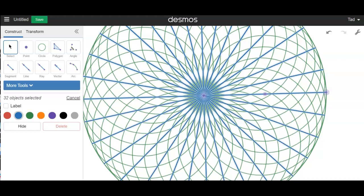I paused the recording because that was kind of boring watching me select those spokes, those radii. So now that all 32 radii are selected and I hit hide.